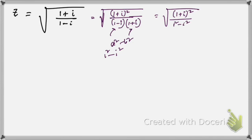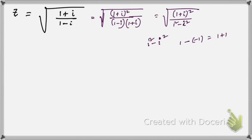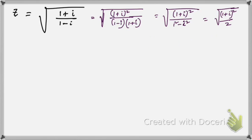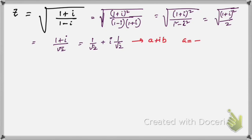Since i² = -1, we get 1² - i² = 1 - (-1) = 2. So we have (1+i)²/2. Taking the square root gives (1+i)/√2. Expanding: z = 1/√2 + i·(1/√2). Comparing with a + ib, we get a = 1/√2 and b = 1/√2.